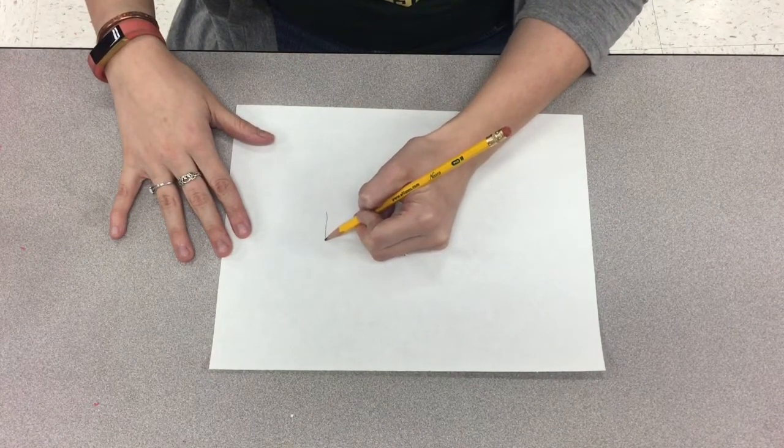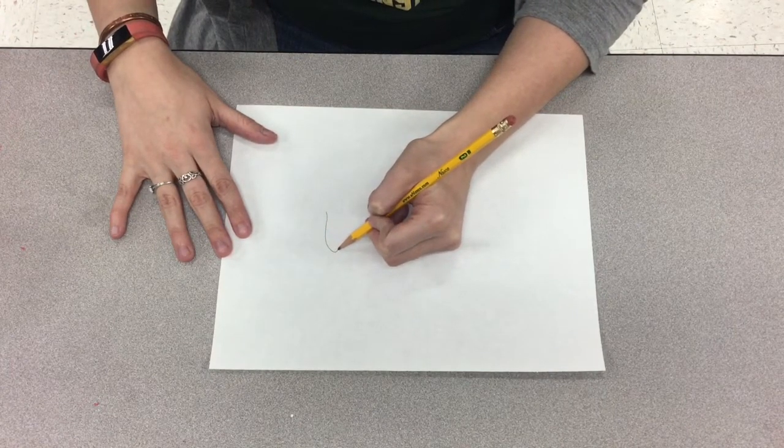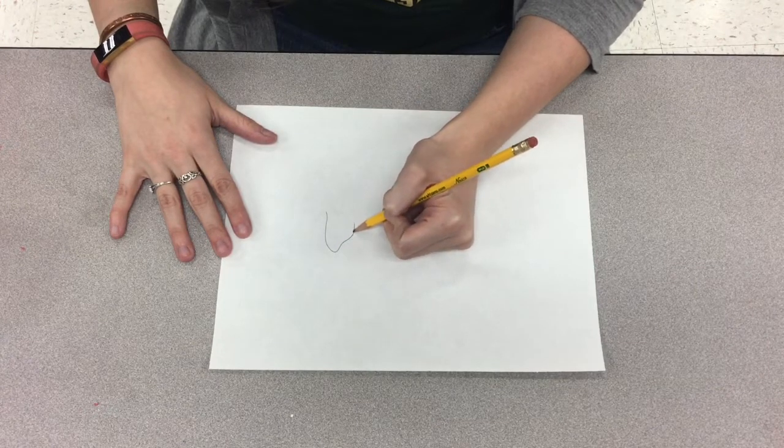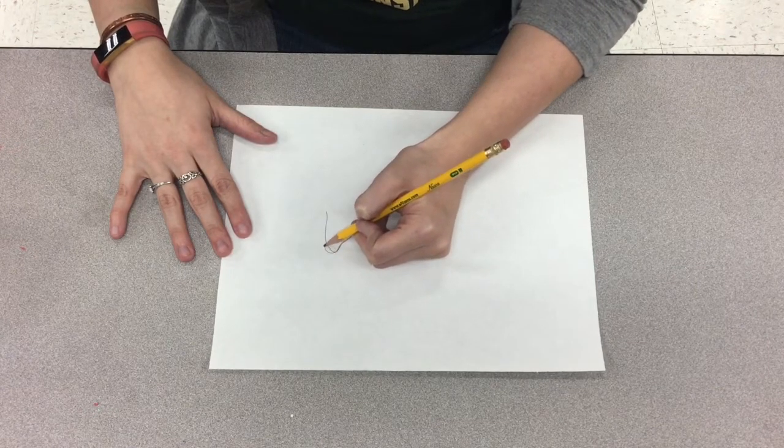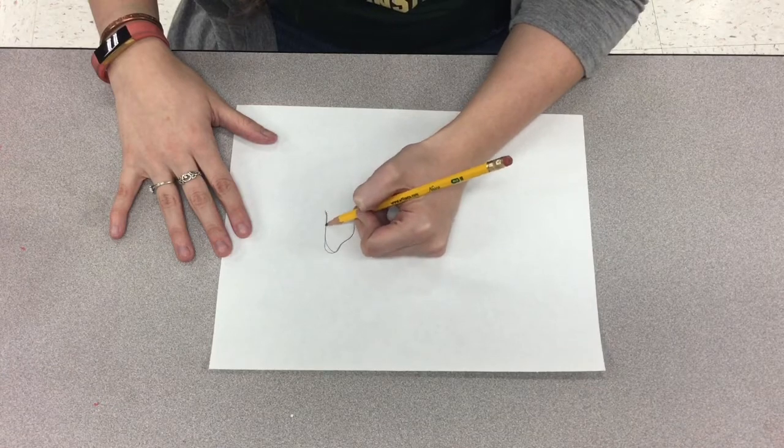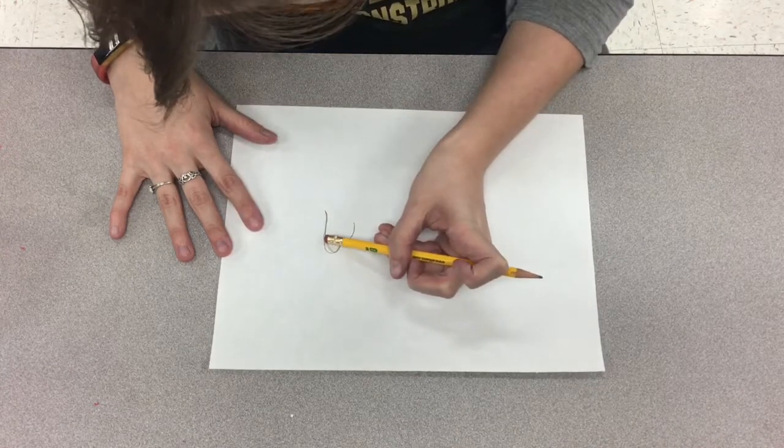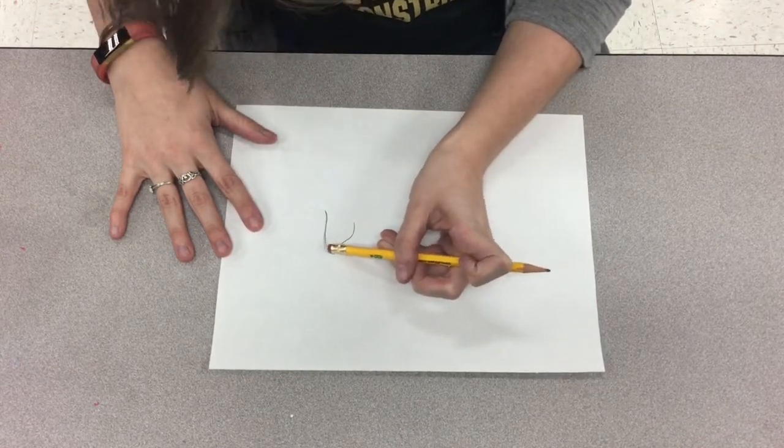First, we're going to draw the head. You're going to make a backwards J shape and bring it up to the jaw of the unicorn's head. You may have to erase a lot, so make sure you draw lightly so that it comes off easier.